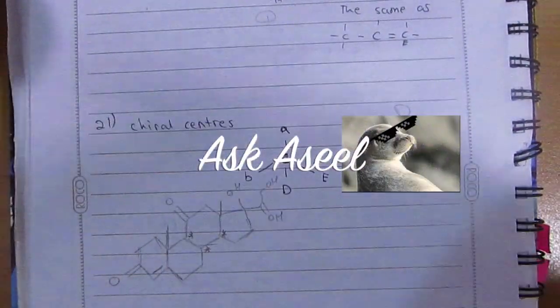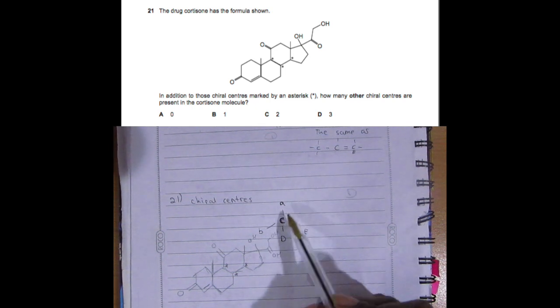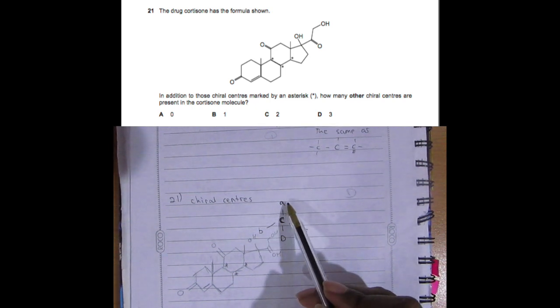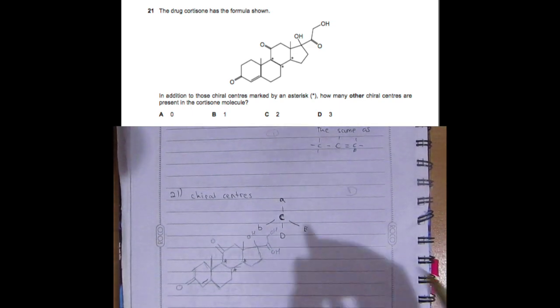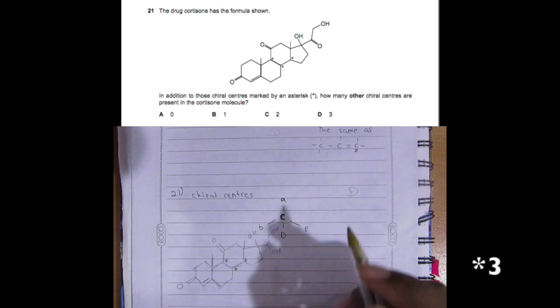Okay, for question 21, I drew it out. We're trying to find where the chiral centers are. A chiral center will have carbon connected to four different elements or compounds, so you have these two that they told us of.